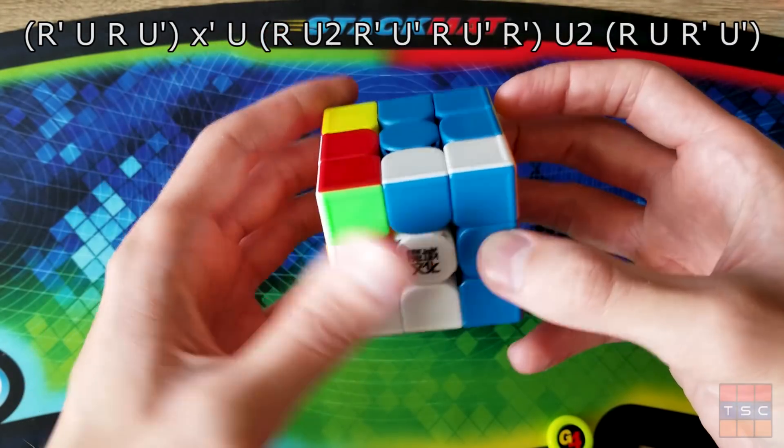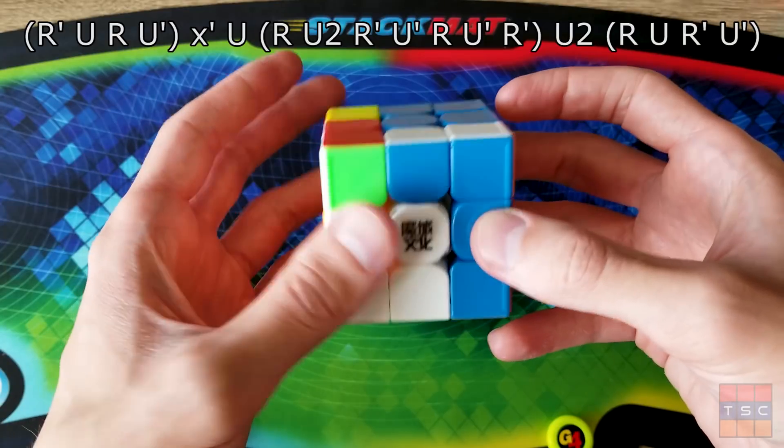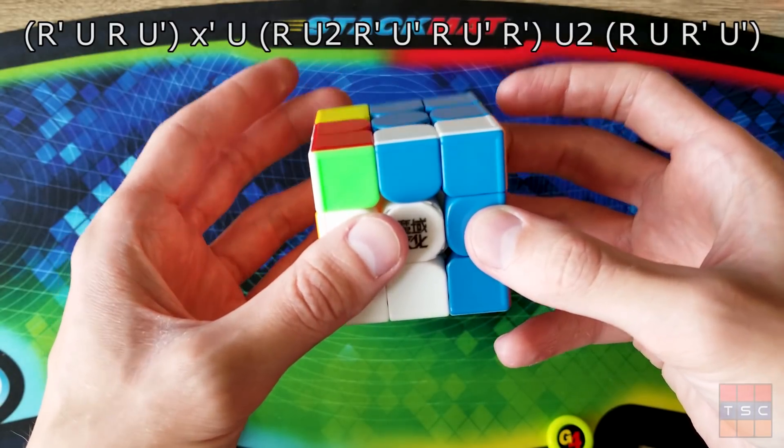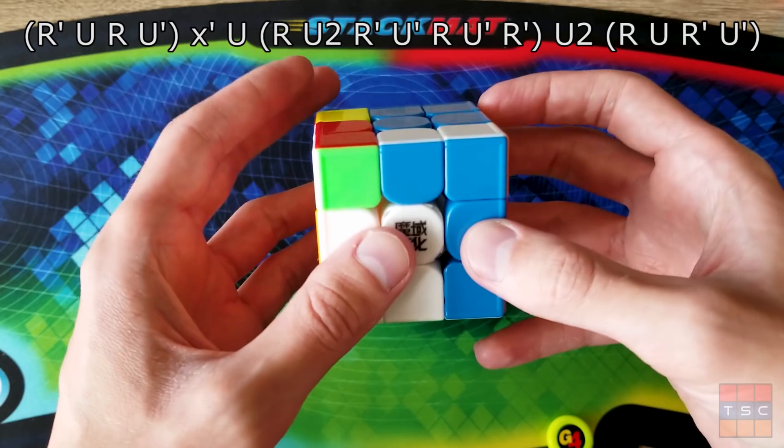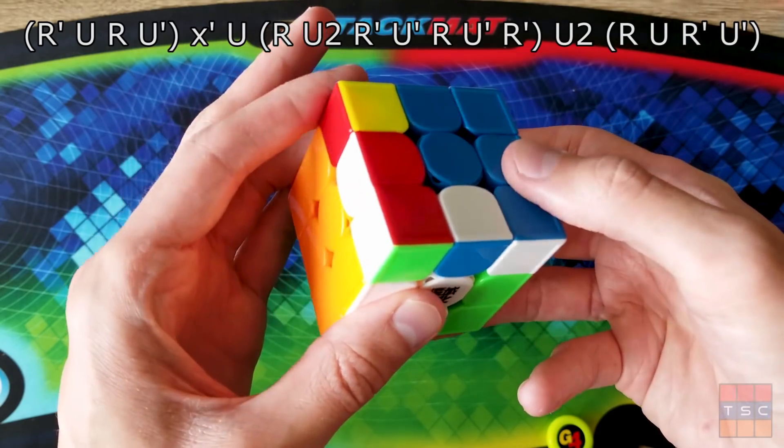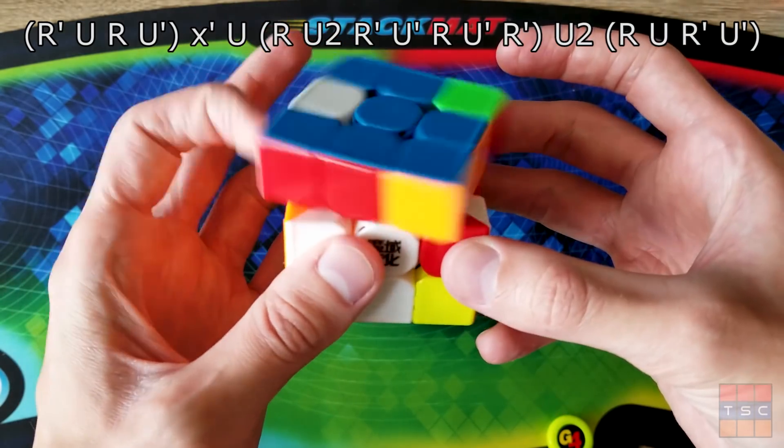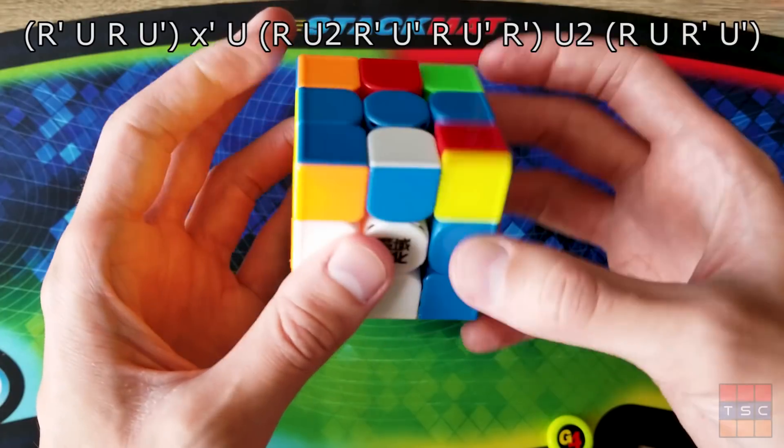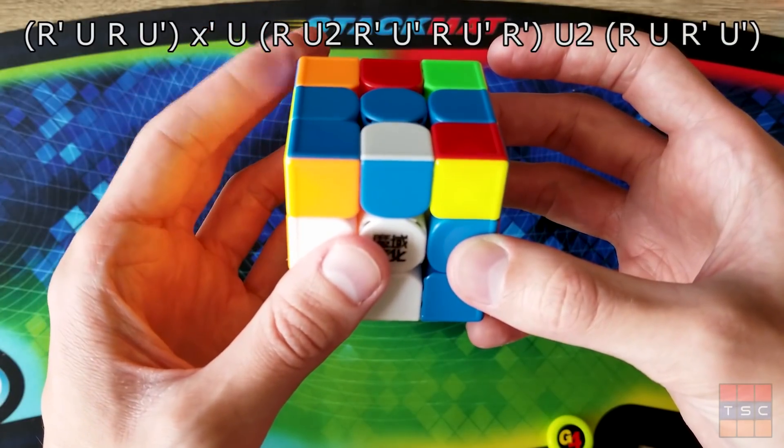And then we do an anti-sune. You do have to be pretty good at using your left fingers for U flicks, or else this next part is going to be kind of hard. But do anti-sune like R U2 R' U' R U' R'. And then you do another U2 with the same fingers.